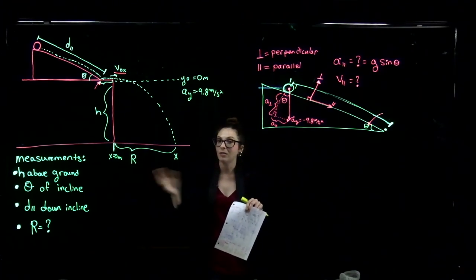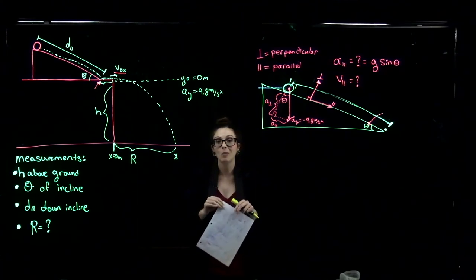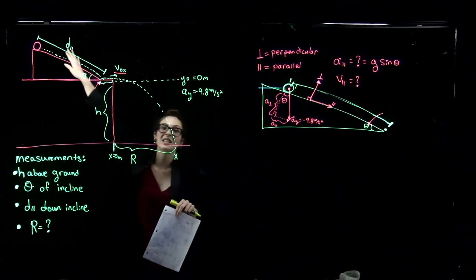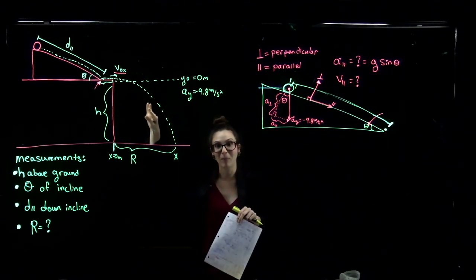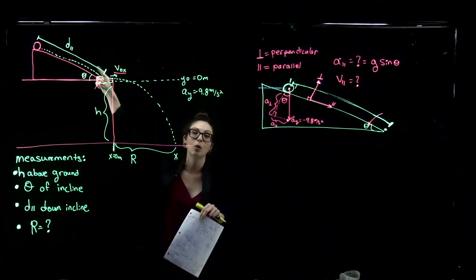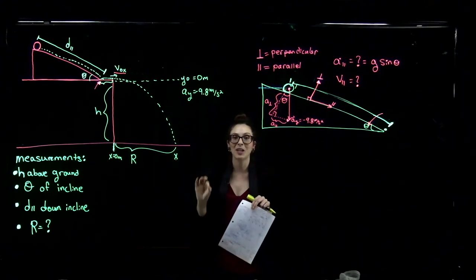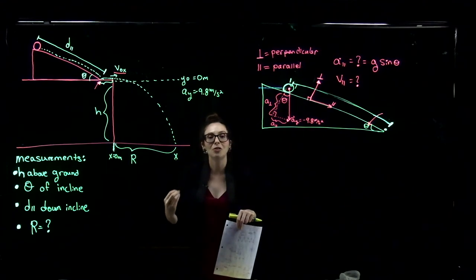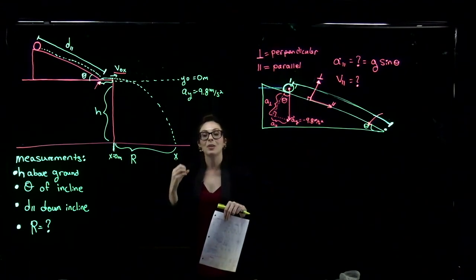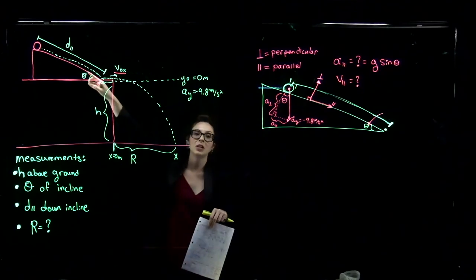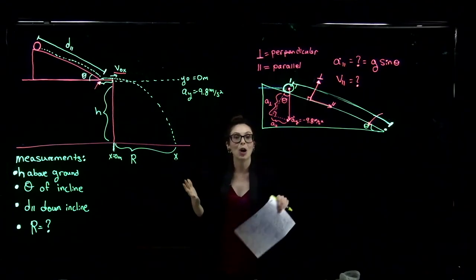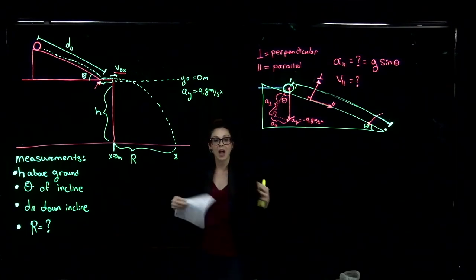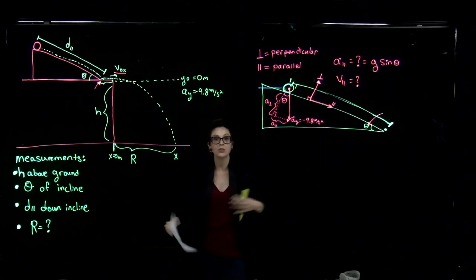It turns out that's not going to be the case, especially when we take into account in future parts of this class the fact that our marble wasn't just sliding straight down the incline — it was actually rolling. When an object is rolling, it has rotational energy, and that rotational energy can take away some of the energy from the kinetic energy that creates the speed at which your object is rolling down the plane. So there are a lot of places in this experiment where you could lose energy.